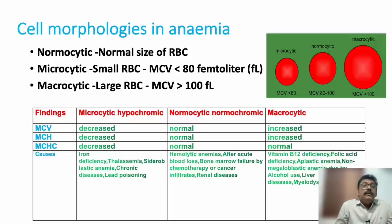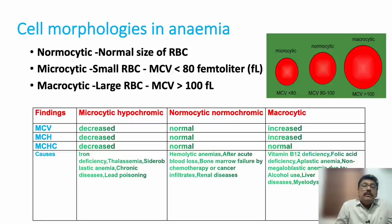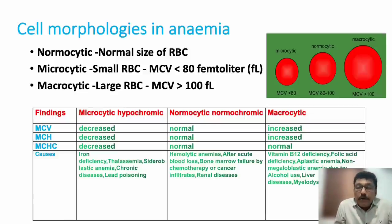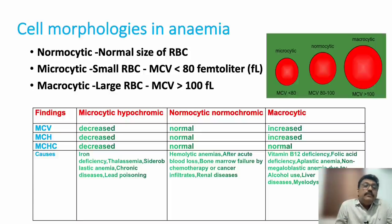When MCV, MCH, MCHC are low, check serum iron, serum ferritin, peripheral smear, and hemoglobin electrophoresis, and look for chronic inflammation. Normocytic normochromic anemia is classically seen in hemolytic anemia — patient may have jaundice or cholelithiasis — and also after acute blood loss, bone marrow failure from chemotherapy or cancer infiltration, and renal disease due to erythropoietin deficiency.